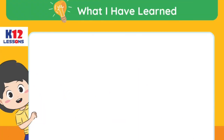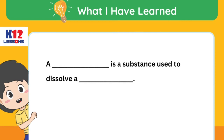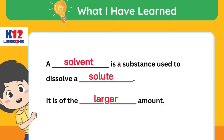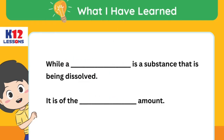What I have learned: A blank is a substance used to dissolve a blank. It is of the blank amount. While a blank is a substance that is being dissolved. It is of the blank amount.